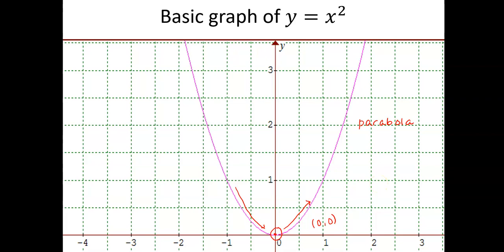Now, this is the graph of the basic parabola, but there are three important things that can happen to this parabola which will transform it. One is called a dilation, the second one is called a reflection, and the third one is called a translation. We're going to look at all three now.